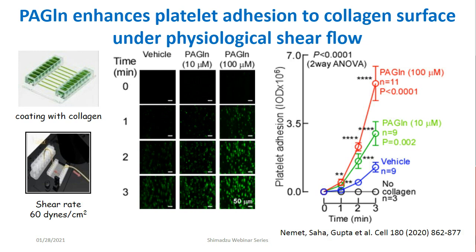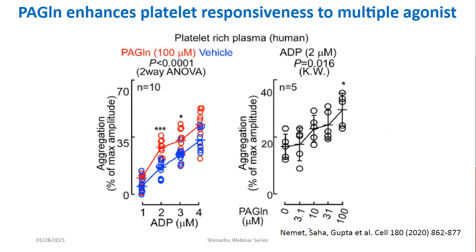Next, we looked at the effect of phenylacetylglutamine on platelet aggregation in platelet-rich plasma in the presence of different agonists. Here I'm showing data for ADP. We had platelet-rich plasma pretreated with phenylacetylglutamine or vehicle, and by increasing the levels of ADP we looked at aggregation. Pretreatment with phenylacetylglutamine shifts the aggregation curve to the left — in other words, phenylacetylglutamine enhances platelet responsiveness — and that effect is dose-dependent. We tested other platelet agonists as well — TRAP6 and collagen — and they show very similar results.